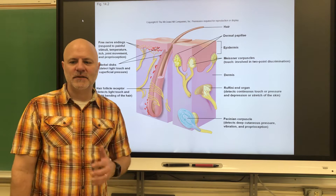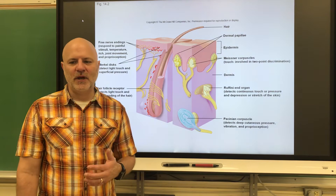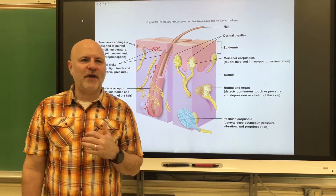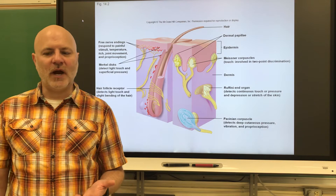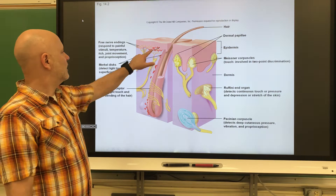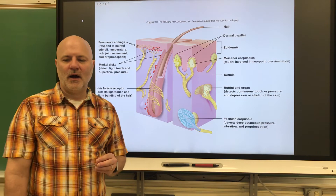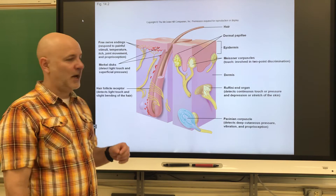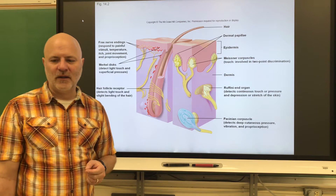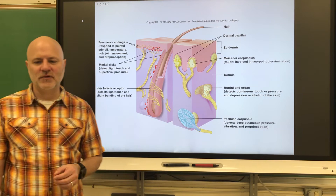First are unencapsulated dendritic endings. These are simple free nerve endings of sensory neurons found all over the body, mostly in epithelia and connective tissue. They sense pain, pressure, temperature, and so on. Next are tactile discs, also known as Merkel discs — these are light touch receptors on the skin associated with nerve endings. Then there are hair receptors that wind around hair follicles and monitor movements of the hair.